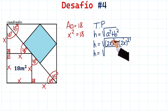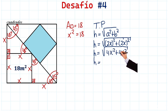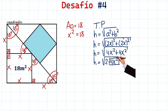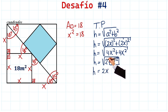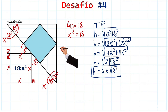(2x)² gives us 4x², so we have the square root of 4x² plus 4x², which equals the square root of 2 times 4x². Taking the square root of 4x² gives us 2x, so the diagonal equals 2x times the square root of 2.